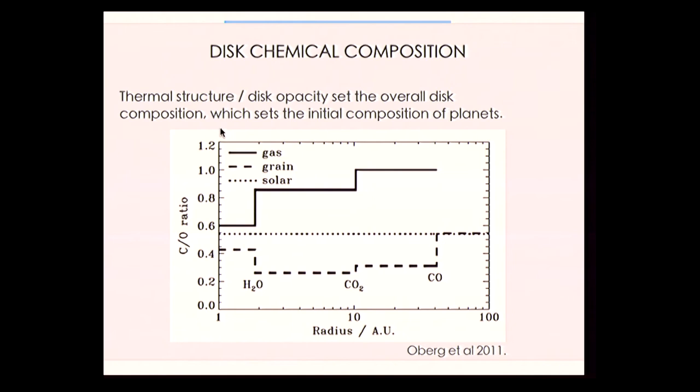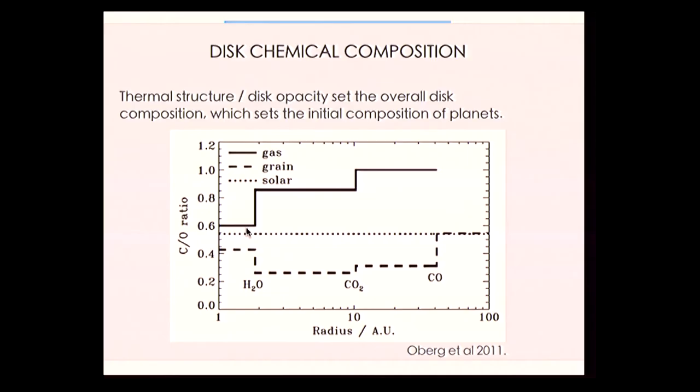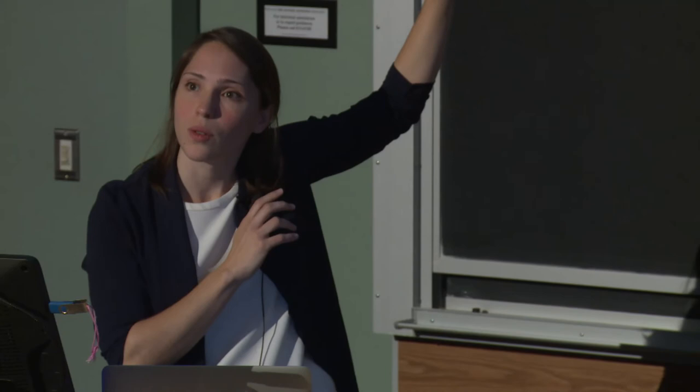In the classical picture, the composition a planet gets depends on its distance from the star. Water freezes out at relatively high temperatures, so only the innermost disk has water vapor. Anything that forms beyond about 1 AU will inherit a lot of water ice. At around 10 AU, you might get carbon dioxide ice, and farther out still, CO and N₂ ice. As these different ices freeze out onto grains, you shift the balance of how much carbon and oxygen is available in the gas versus the ice, affecting the C/O ratios of planets — as measured in that directly imaged four-planet system.